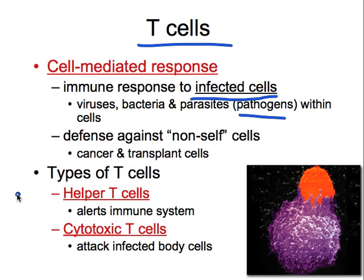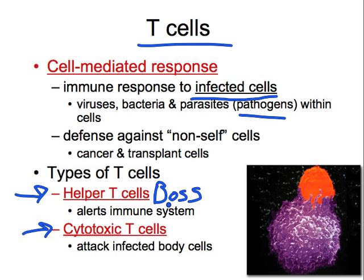There are two different types of T-cells: helper T-cells and cytotoxic T-cells. Helper T-cells do just that — they call everybody up, make sure everybody's doing their job, but they're not doing any heavy lifting. They're not the manual labor guys, but they're key because if they don't tell the other guys what to do, the other guys don't know where or how to do their job. Helper T-cells are kind of like the boss of the whole operation. Cytotoxic T-cells specifically attack infected body cells and make them go through apoptosis, which is programmed cell death.